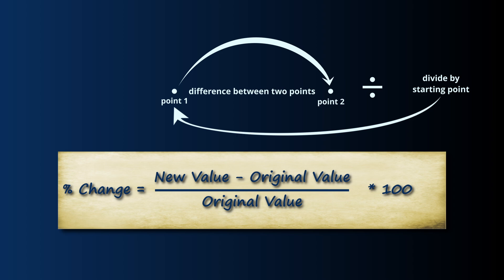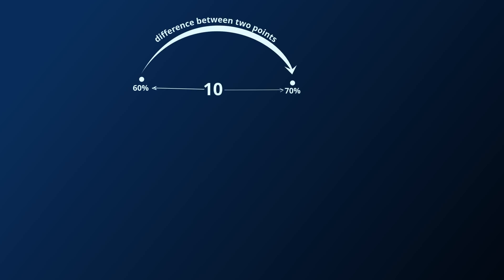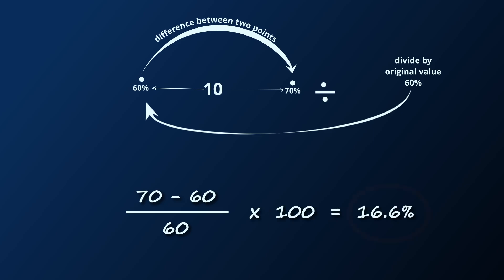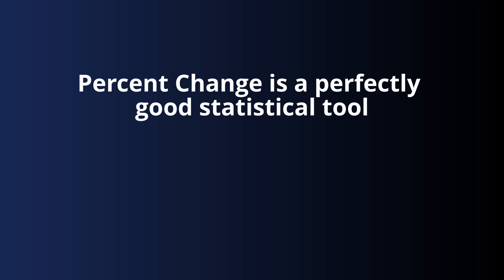Basically it's an expression of change between two points in relation to the size of the original point. So with the percentages of average damage: if we start at 60 percent and move to 70, that is a change of 10. Then we divide that 10 by the original value of 60 and we get 0.166, and then we multiply by 100 to turn it into a percentage — we get 16.6 percent.